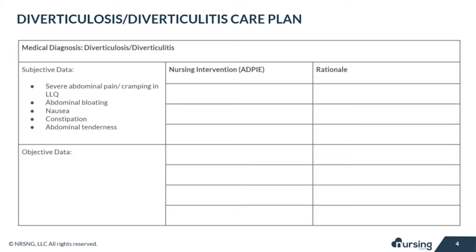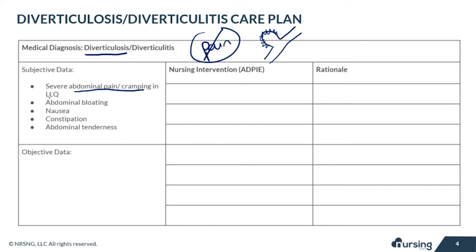Your patient that has diverticulosis without the diverticulitis may not experience any pain at all — they may not even realize they have the disease at first. The patient that starts to get diverticulitis, where those diverticula in the intestines become inflamed, irritated, and infected, will probably have some severe abdominal pain and cramping in the left lower quadrant along with some abdominal tenderness. When the walls of the intestines become inflamed, irritated, and thickened, it's harder for the stool to move through, causing constipation, which leads to nausea and abdominal bloating.